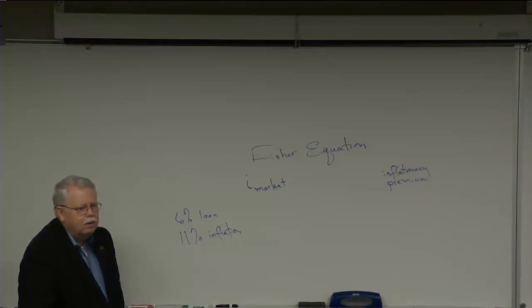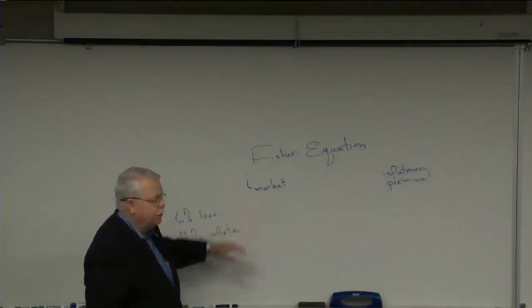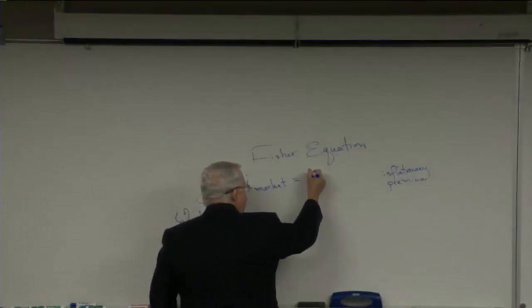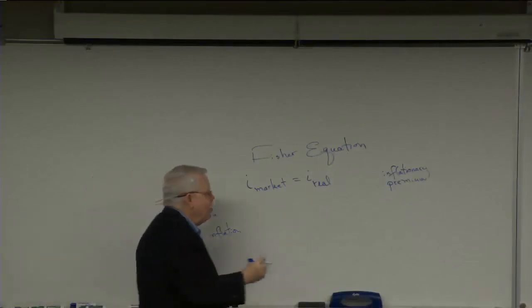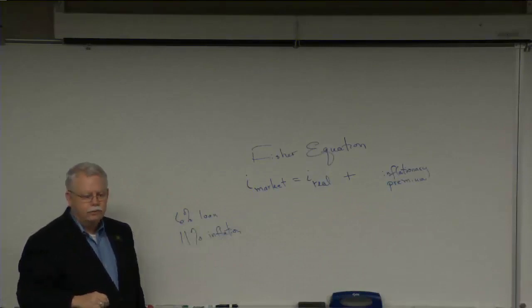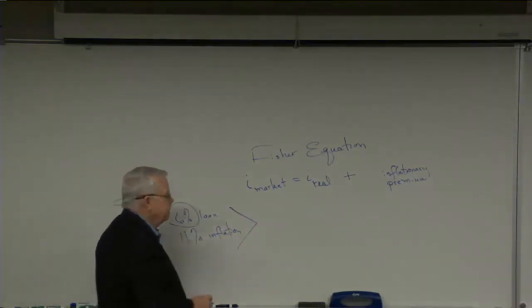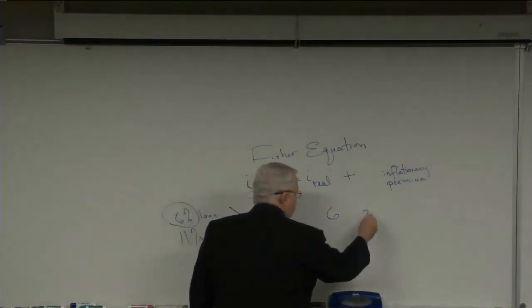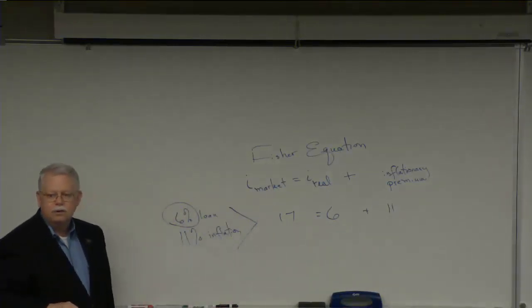You know what I mean by real interest? Interest adjusted for inflation, or after you subtract inflation. So Fisher gives us this thing. He says the banks will charge a market rate of interest which will be equal to a real rate of interest that they want to earn, plus some protection for inflation. So in the example down here, if the bank wanted to earn 6 percent and inflation was at 11, they would be charging 17 percent on the loan.